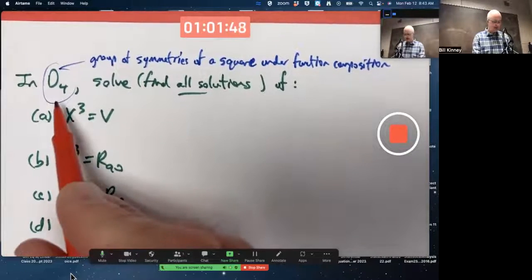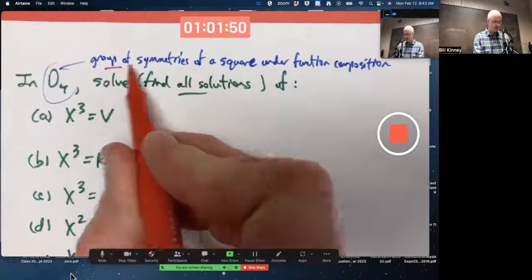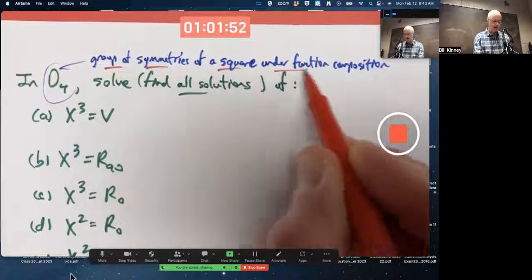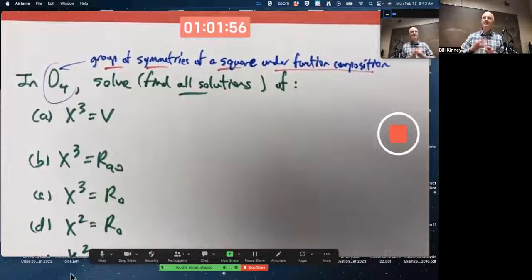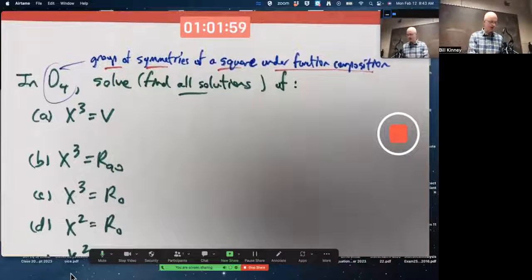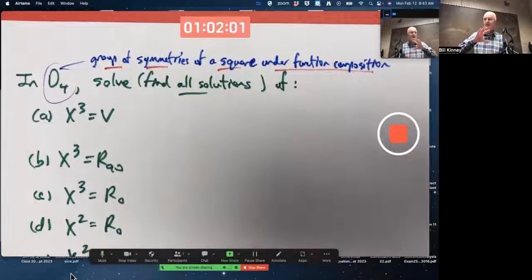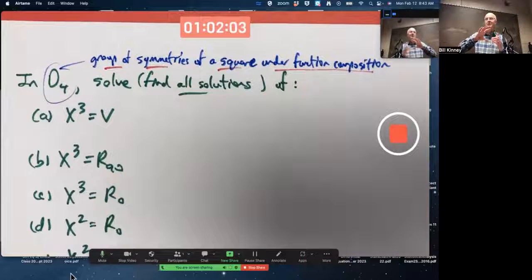This problem says in D4, which is the group of symmetries of a square under function composition being the operation, that consists of four rotations, the one of this, which R0 is just the identity rotation, rotate by zero degrees, in other words, don't do anything.